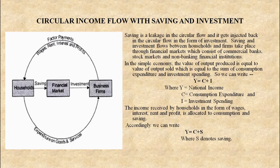Now moving on to the next point: circular income flow with saving and investment. Look at the diagram. When we say there is saving and there is investment, it is included in this diagram. Saving is a leakage in the circular flow and gets injected back into the circular flow in the form of investment. Saving by households comes to the financial market and goes as investment to the business firm. Saving and investment flows between households and firms take place through financial markets, which consist of commercial banks, stock market and non-banking financial institutions.